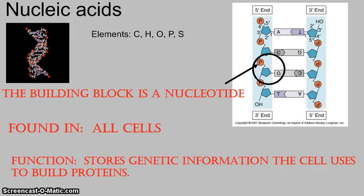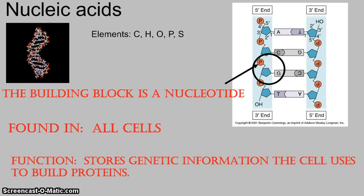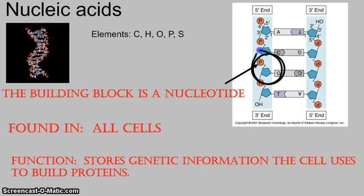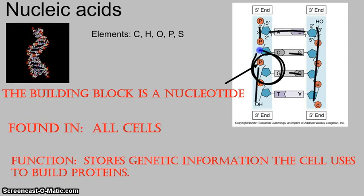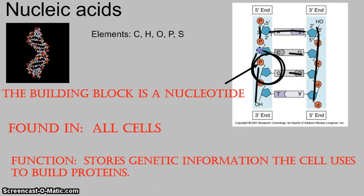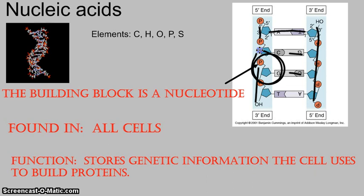Next up is nucleic acids. We'll be talking a lot about nucleic acids towards the middle and end of this trimester. The elements in nucleic acids are carbon, hydrogen, oxygen, as well as phosphorus and sulfur. The building block of a nucleic acid is a nucleotide. This whole structure is a nucleic acid, but it's made up of individual nucleotides. They're found in all cells — all living things contain nucleic acids in every single cell. Their function is to store genetic information; the cell uses this to build proteins.